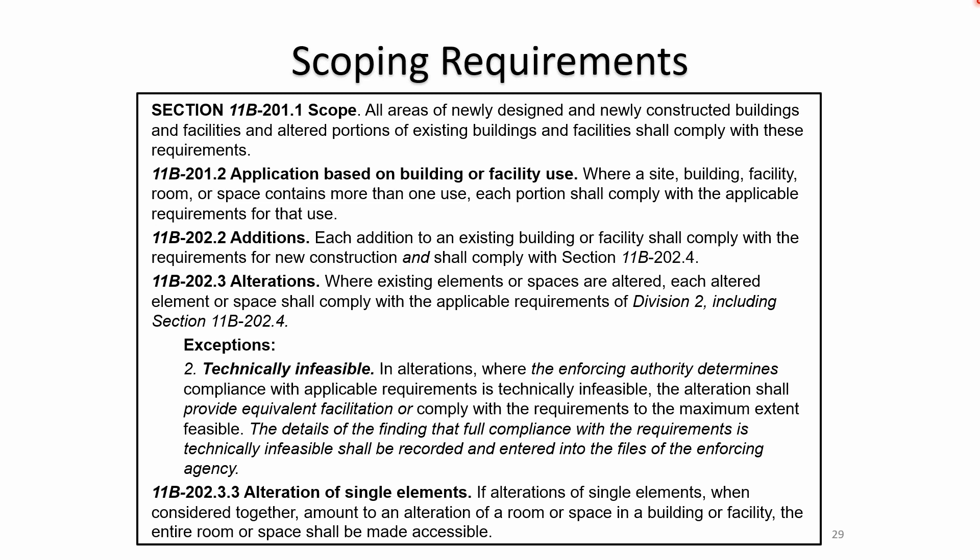Application is based on building or facility use. For additions, each addition to an existing building or facility shall comply with the requirements. For alterations, anything new needs to comply. Where technically infeasible alterations occur, some allowances can be made, but the details of the finding must be recorded and entered into the files so there's a record of anything agreed to as technically infeasible. Alteration of a single element in a room does not trigger additional path of travel.